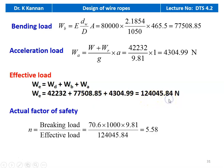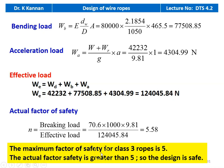The actual factor of safety equals breaking load divided by effective load: 70.6 tons into 1000 into 9.81 divided by 1,24,045.84 equal to 5.58. The maximum factor of safety for class 3 rope is 5, and the actual factor of safety is greater than 5, so the design is safe.